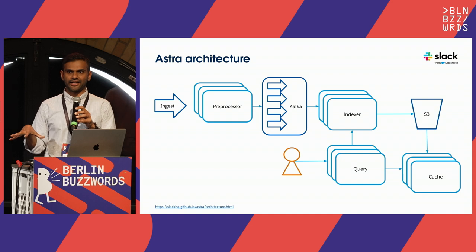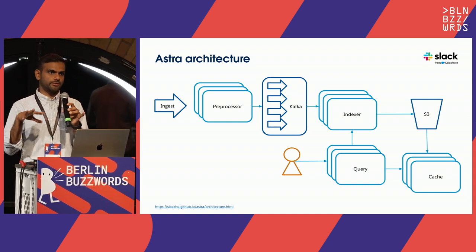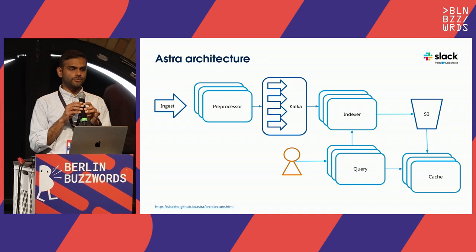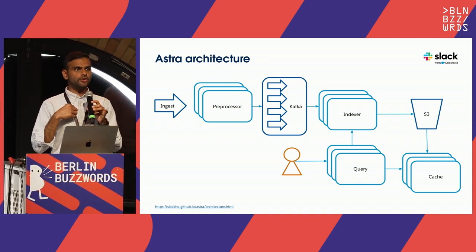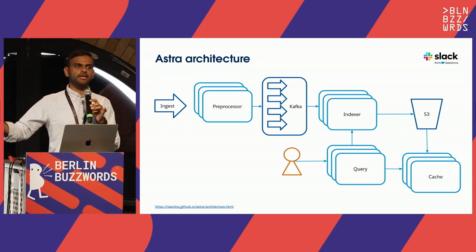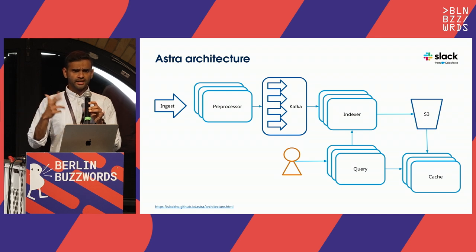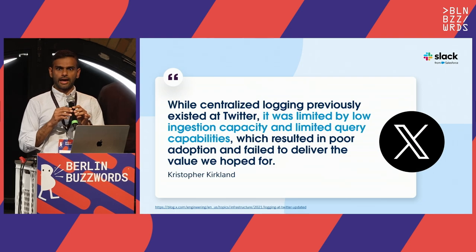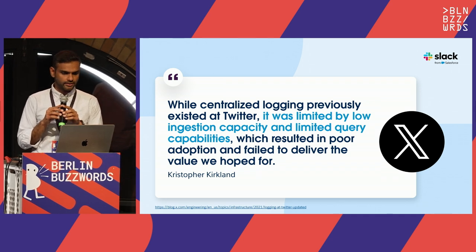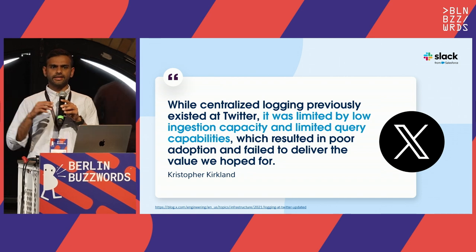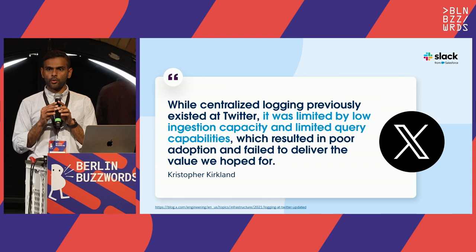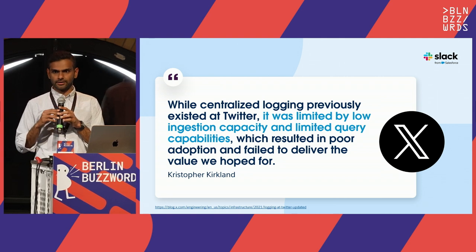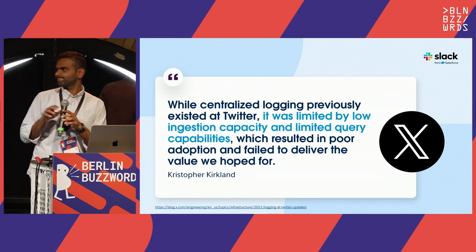So essentially you have indexers and then cache nodes. All of this gets coordinated through a cluster manager and ZooKeeper. When you query, the query engine knows to get recent data from the indexers and the remaining data from the cache nodes. It does a scatter-gather, collates data, and ships it out to the user. That's Astra's architecture in a nutshell. I'll leave with a quote from a LogLens engineer mentioning some of the reasons they stopped developing LogLens, and Brian will discuss how we feel what we've built won't come to the same fate.